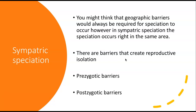The next type is sympatric speciation. If allopatric means 'different fatherland,' sympatric means 'same fatherland.' You might think geographic barriers are always required for speciation, but sympatric speciation is speciation that occurs right in the same area. There are going to be barriers that create reproductive isolation — prezygotic barriers and postzygotic barriers. A zygote is what forms when you combine sperm and egg, so prezygotic barriers happen before the zygote forms and postzygotic barriers happen after.